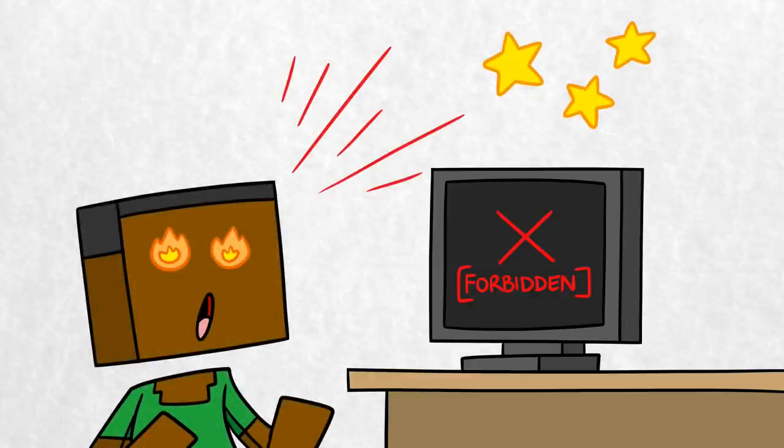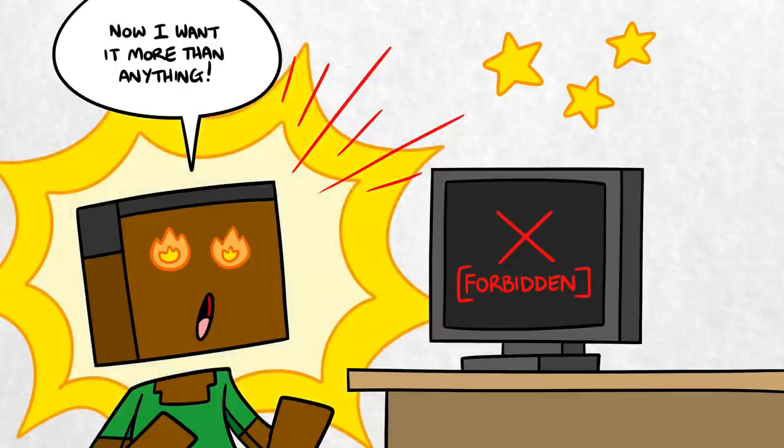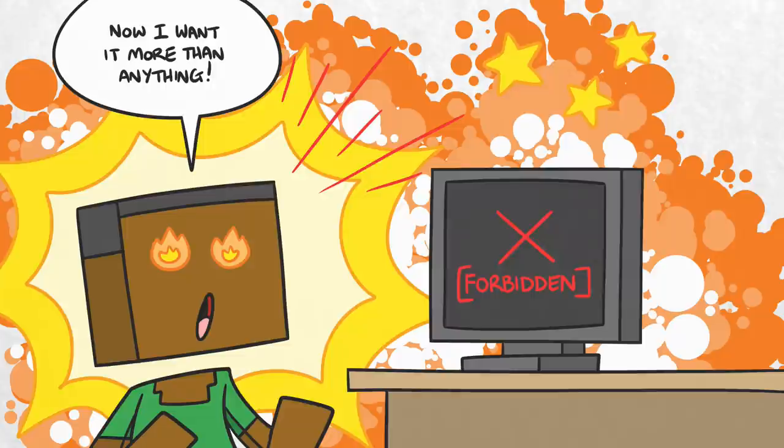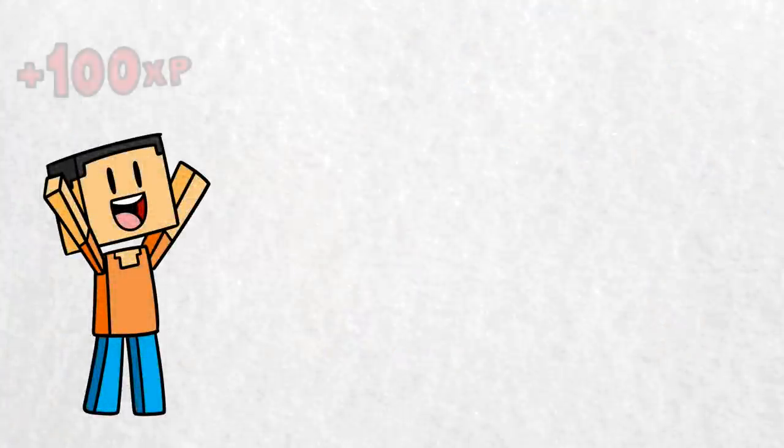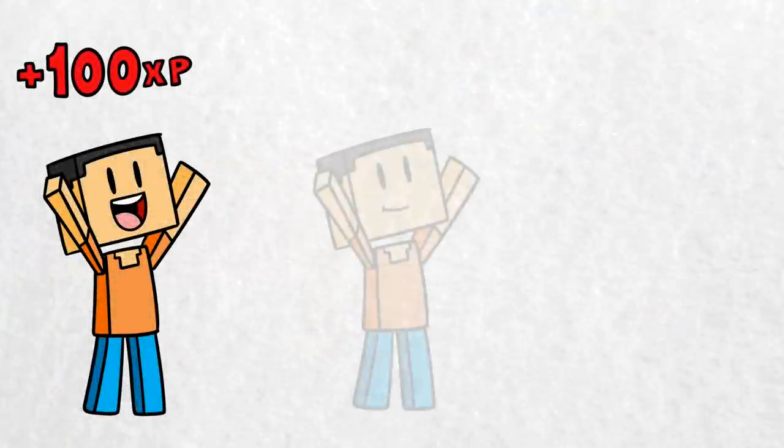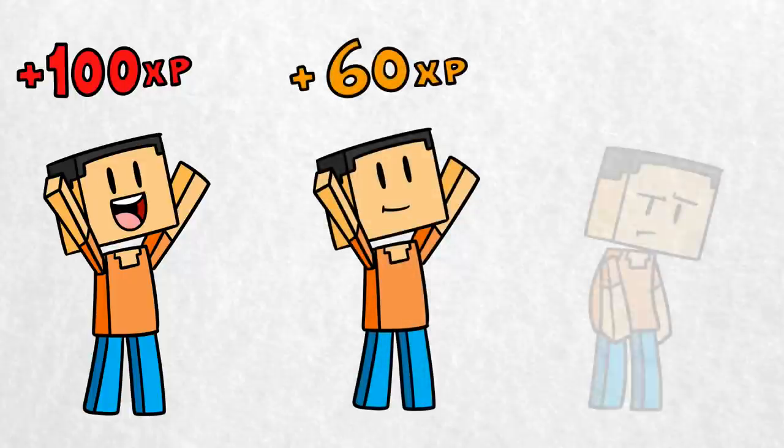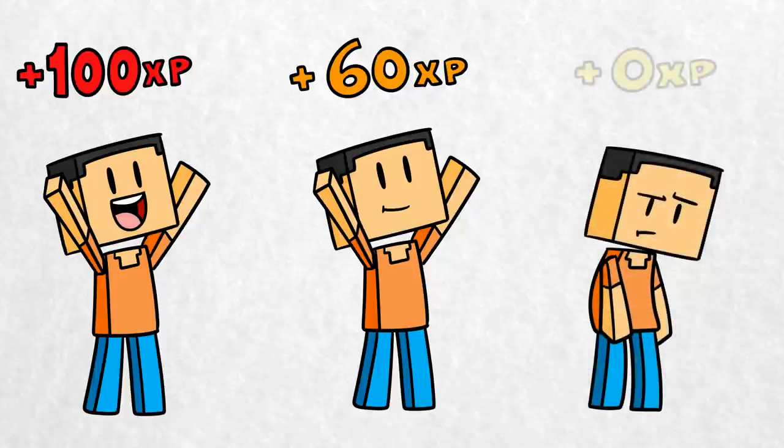So what solution is best for combating genuine cases of video game addiction? One solution which was previously used in China involved varying player rewards based on playtime. Games would give out less experience points after three hours of gameplay, and no experience at all after five hours. This helped players to make the decision to turn off the game themselves.